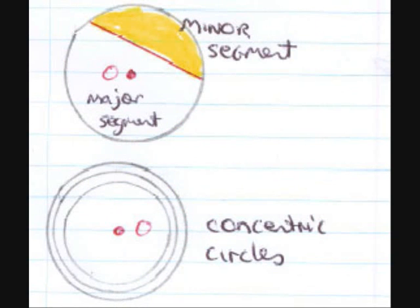But also we have something called a segment. A segment is a little bit different. It doesn't go through the centre. It's part of the circle. So you've got the minor segment and the major segment.